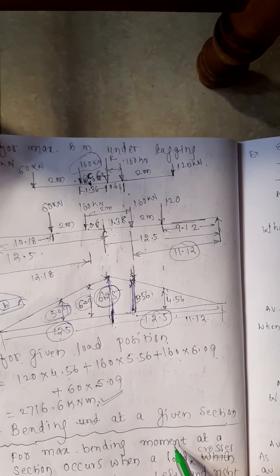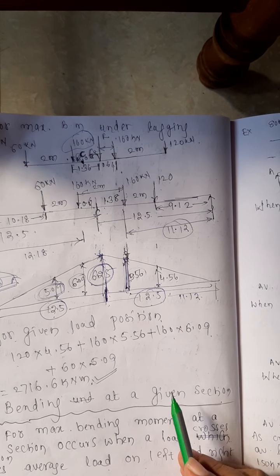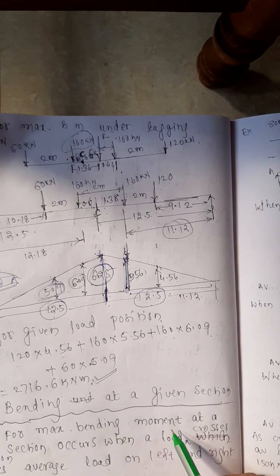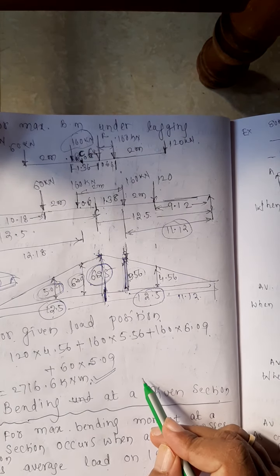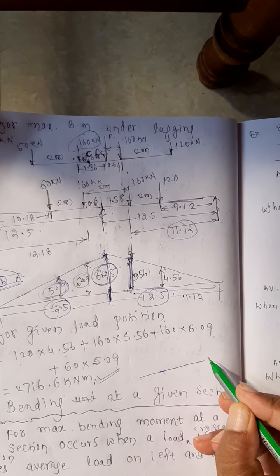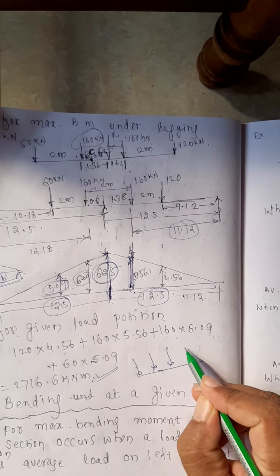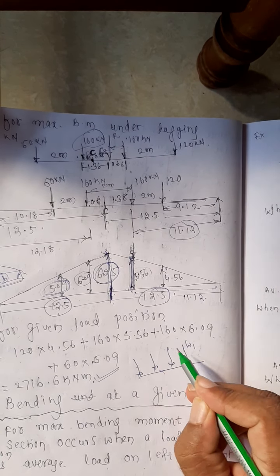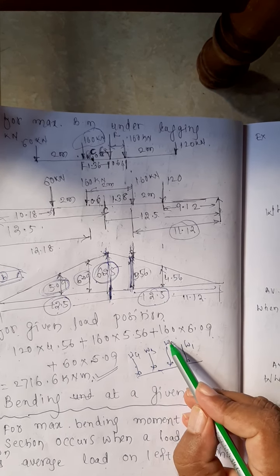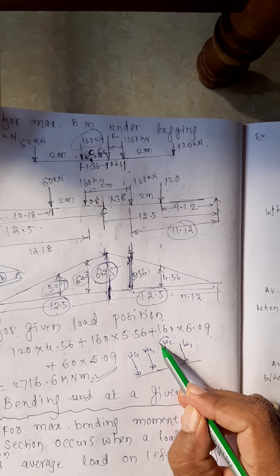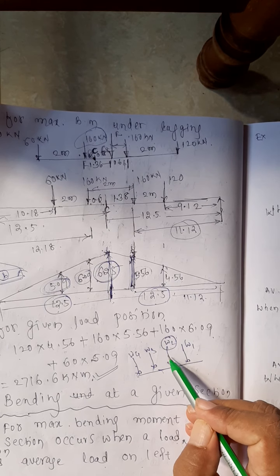Yes friends, we are going for the next category of problems. In the previous class, we have seen how to get the maximum bending moment under a given load in a train of loading, when a number of loads are moving — w1, w2, w3, w4. If I want the maximum bending moment under the load w2, how to analyze it? We have seen it.